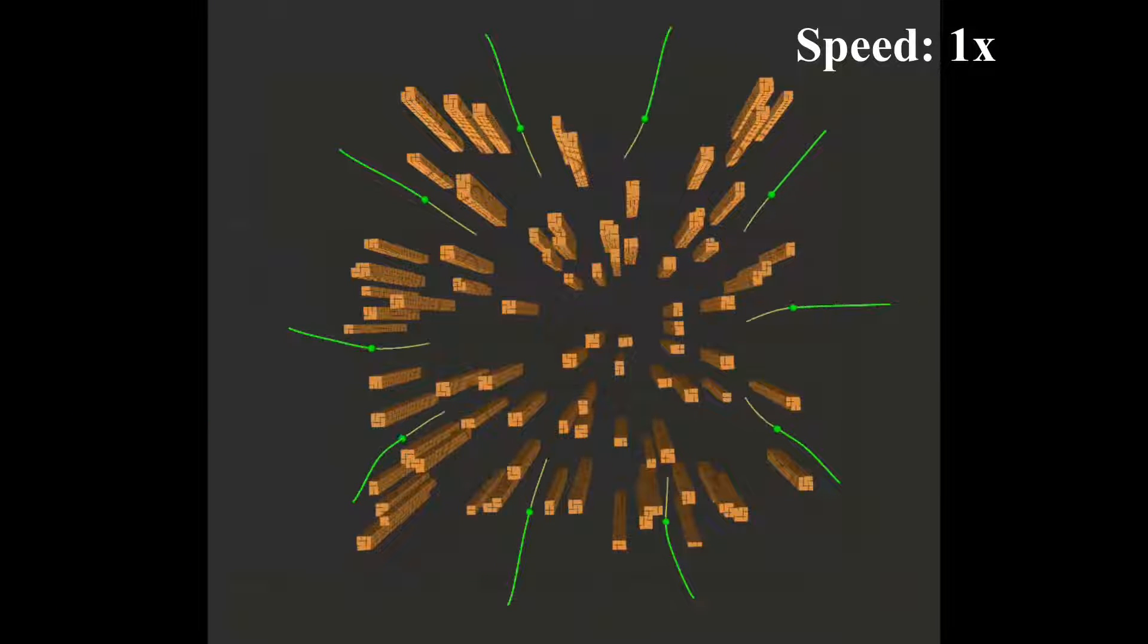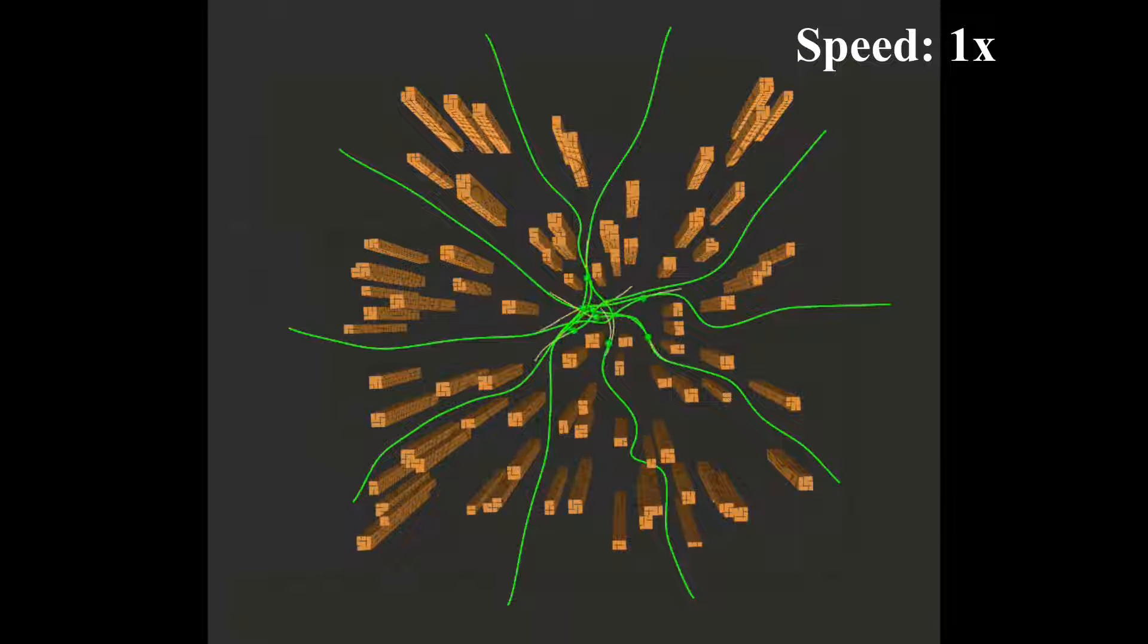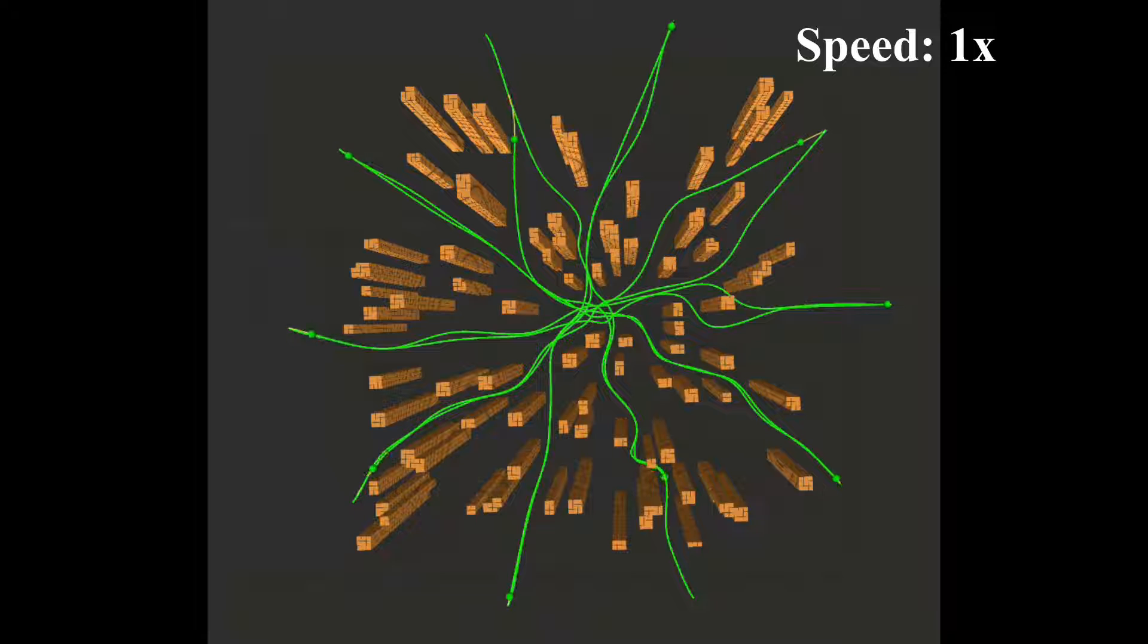In another simulation, we put the drones in a circular configuration and ask them to exchange positions with no prior knowledge of the environment. The drones have to navigate through a dense forest and then avoid each other in the centre before reaching their final destination.